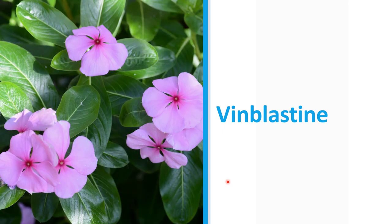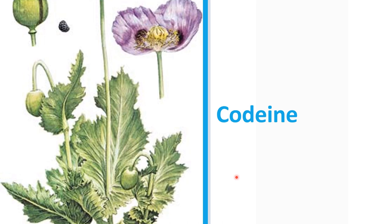Another alkaloid is vinblastine, derived from the flowering plant Catharanthus roseus, commonly known in Filipino as chichirica, with anti-cancer properties. Another alkaloid is codeine, derived from the opium poppy, Papaver somniferum, which is also a source of morphine. It can be used as an analgesic or pain reliever, as well as an antitussive — a drug used to prevent or relieve a cough.